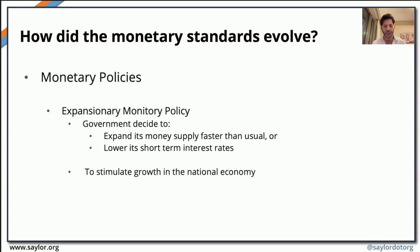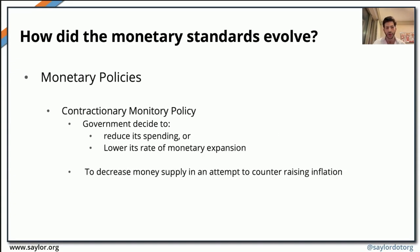For example, we have what is referred to as an expansionary monetary policy. Using expansionary monetary policy, governments aim to stimulate growth in the national economy by expanding the money supply more than usual, and they might also opt for lowering short-term interest rates. On the other hand, we have contractionary monetary policy, where countries aim to decrease the money supply to counter rising inflation rates. Governments would reduce their spending or lower the rate of monetary expansion.